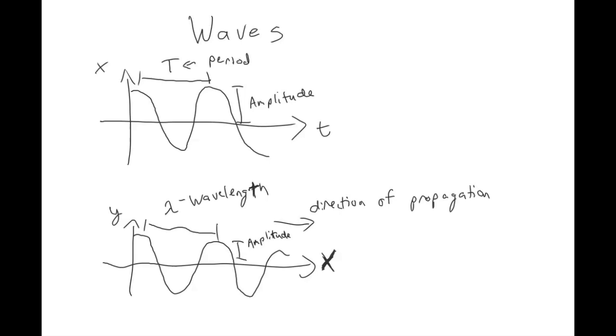This would still be the amplitude. Depending on which graph you're looking at, the distance from peak to peak is either the period if the X axis is time, or its wavelength if the X axis is a distance.